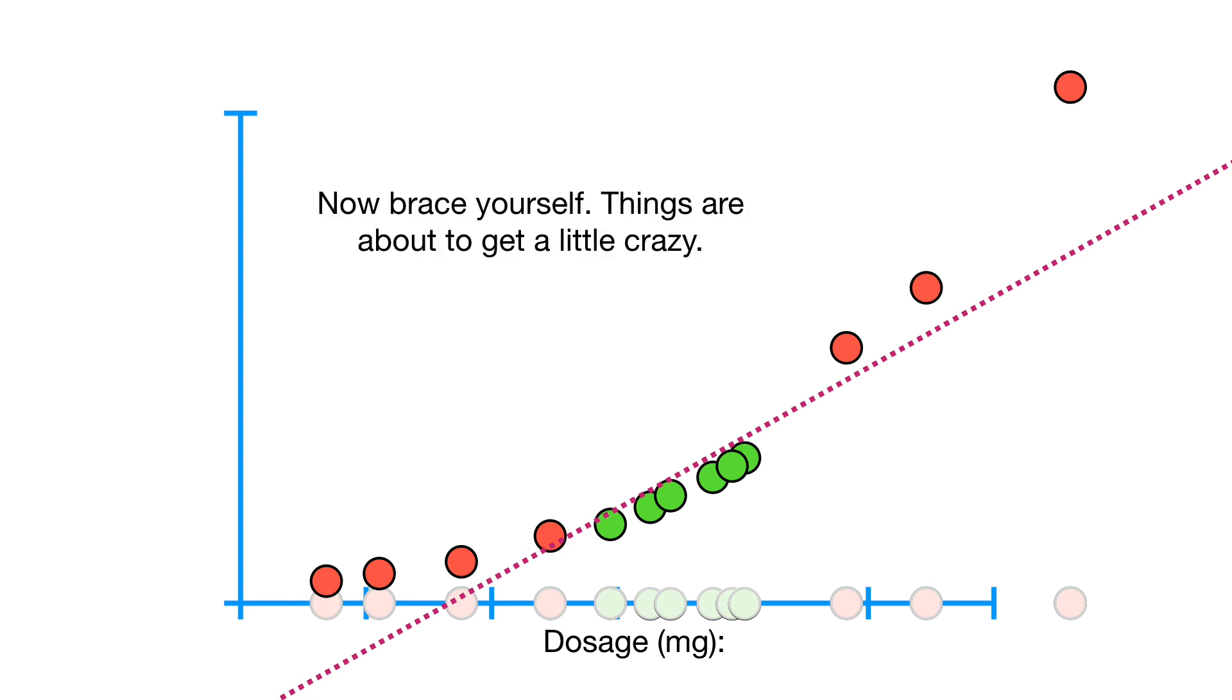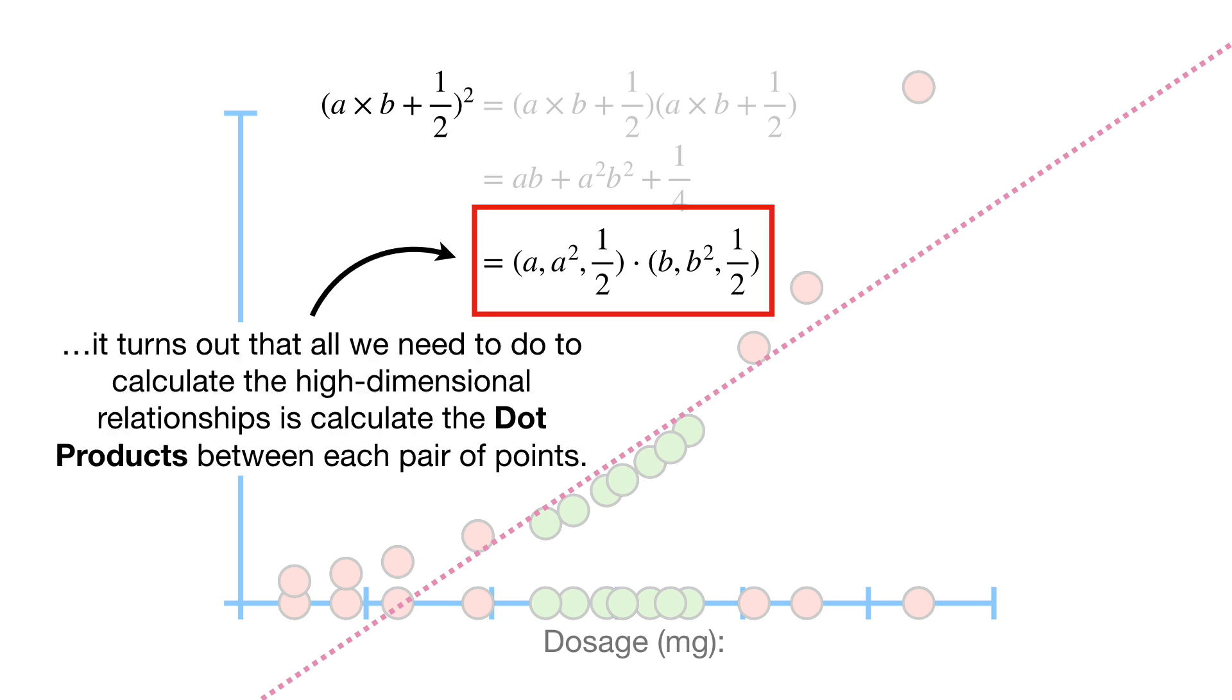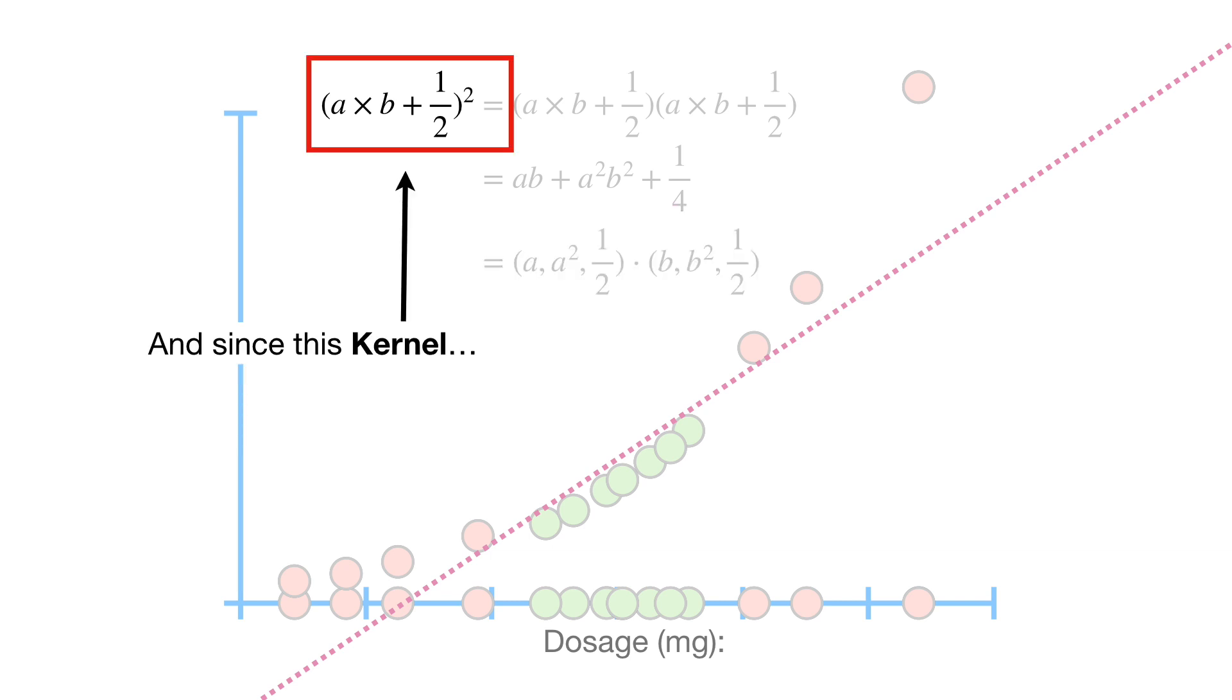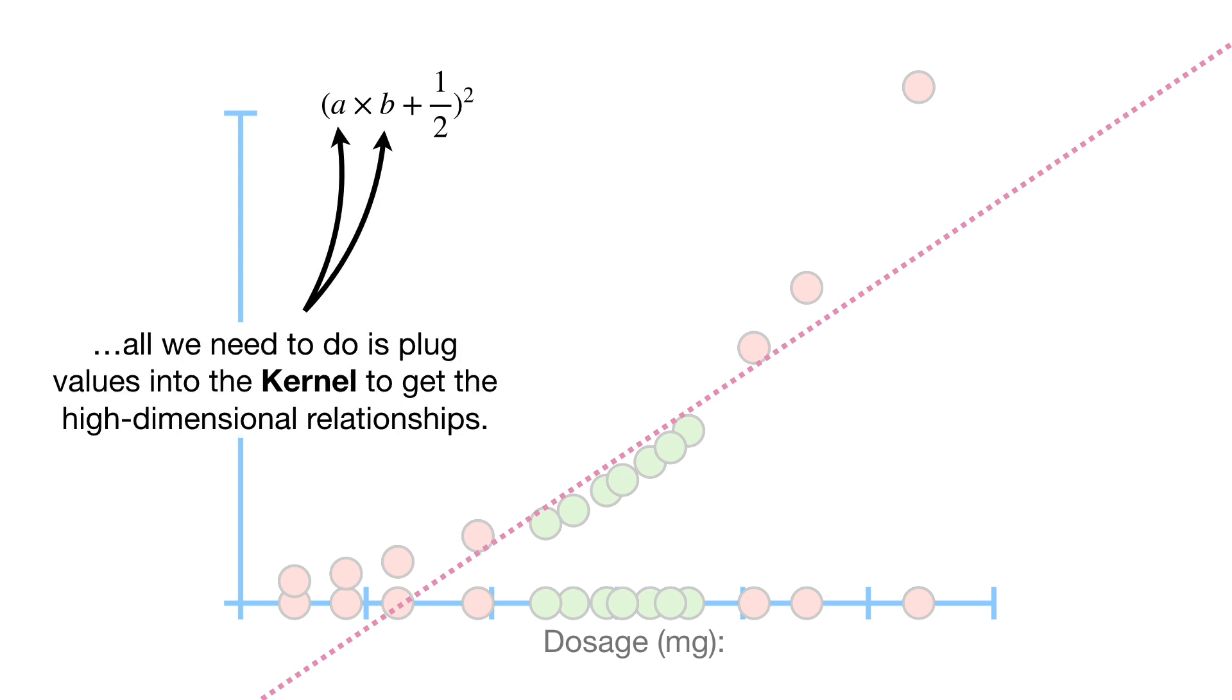Now, brace yourself. Things are about to get a little crazy. Going back to the polynomial kernel with R equals 1 half and D equals 2, it turns out that all we need to do to calculate the high-dimensional relationships is calculate the dot products between each pair of points. And since this kernel is equal to this dot product, all we need to do is plug values into the kernel to get the high-dimensional relationships.